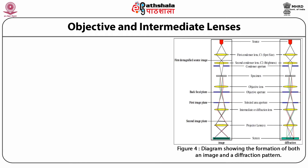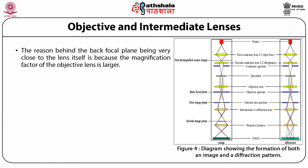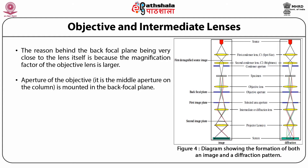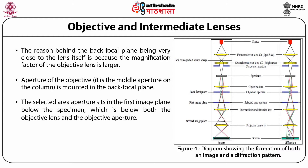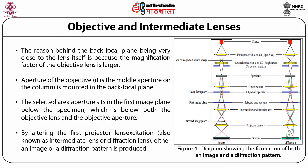Next, the objective and intermediate lenses are discussed. The back focal plane is very close to the lens itself because the magnification factor of the objective lens is large. The objective aperture, which is the middle aperture on the column, is mounted in the back focal plane. The selected area aperture sits in the first image plane below the specimen, below both the objective lens and the objective aperture. By altering the first projector lens excitation, also known as the intermediate or diffraction lens, either an image or a diffraction pattern is produced, as shown in figure 4.